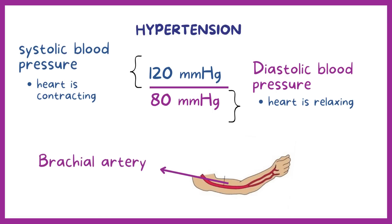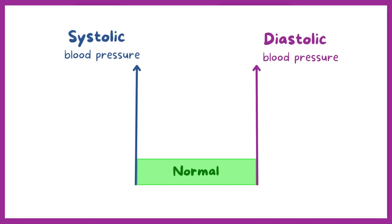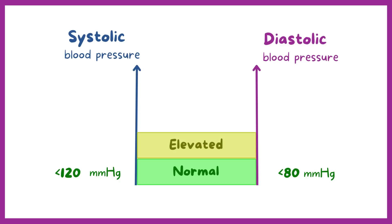Usually blood pressure is monitored in the brachial artery in the upper arm. Normal systolic blood pressure is defined as less than 120 mmHg, and the normal diastolic blood pressure is less than 80 mmHg. Elevated systolic blood pressure is considered between 120 and 129 mmHg, and less than 80 mmHg on the diastolic side.